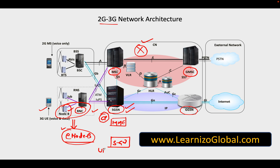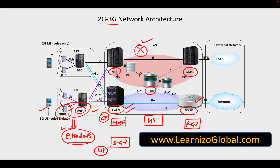Another function called SGW, or Serving Gateway, typically takes care of the user plane part of it. The GGSN stays as it is and this functionality is now named as PGW, or PDN Gateway. The HLR moves away from the register kind of architecture into a server kind of architecture, and that's why we refer to it as HSS, Home Subscriber Server.